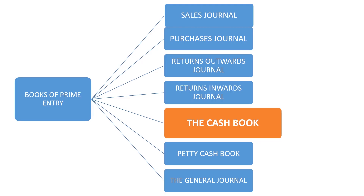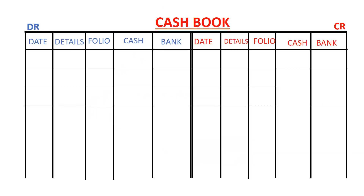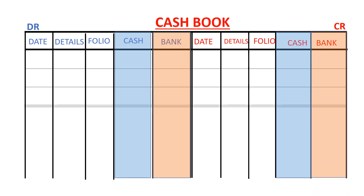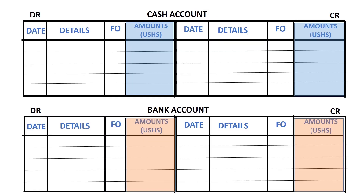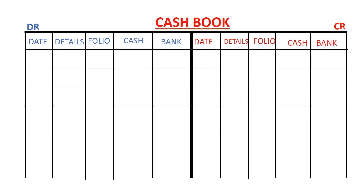In the cash book, the debit column for cash is put next to the debit column for bank. And the credit column for cash is put next to the credit column for the bank. On your screen is how a cash account and a bank account would appear when kept separately, and this image now shows how they would appear if kept in a cash book.